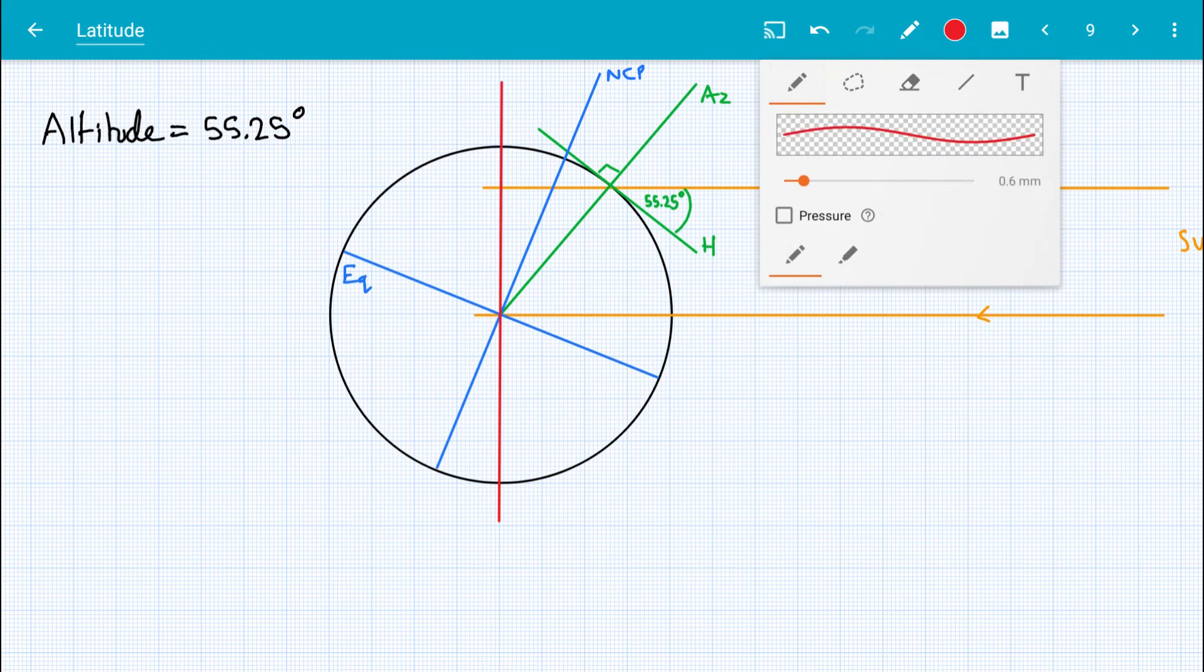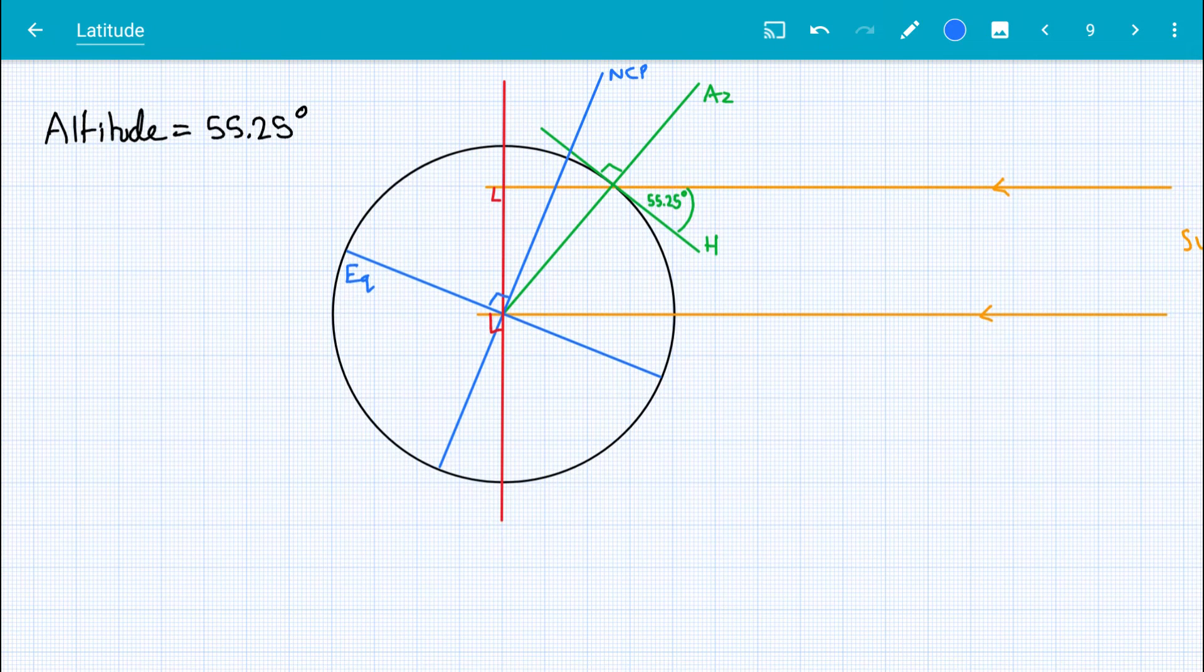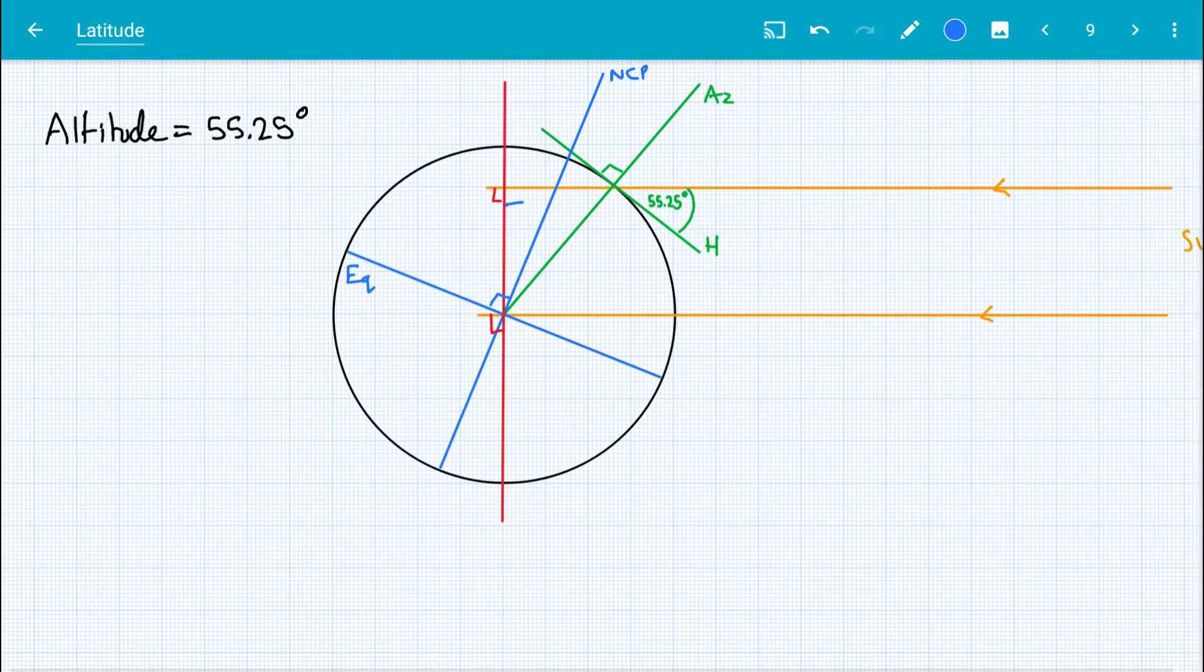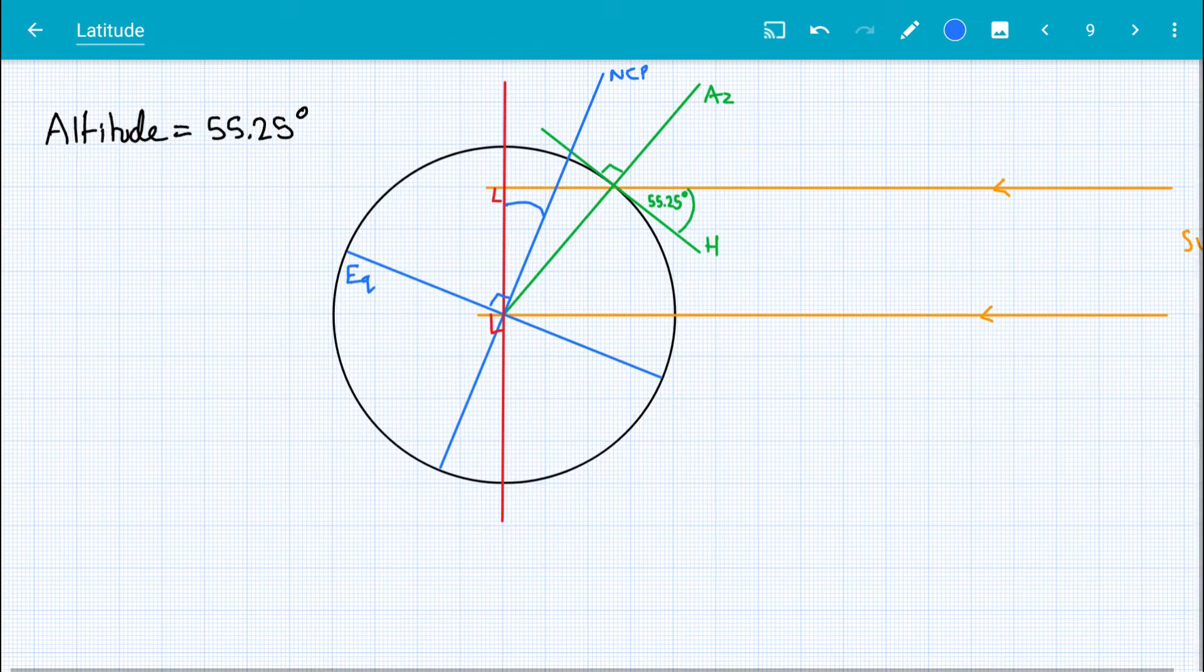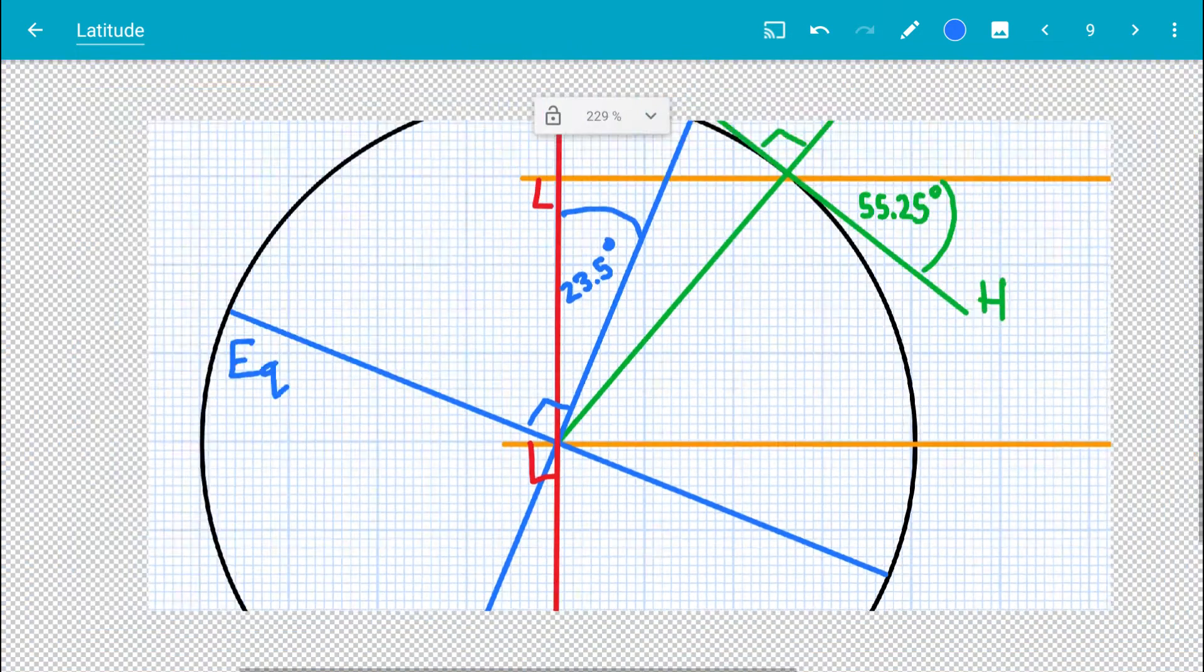So let's label off some 90 degree bits. That's 90 degrees, that's 90 degrees, that's 90 degrees to that. Different color to make it clearer. And we have got this angle here. That angle is the axial tilt of the earth, 23.5 degrees is what we are taking that as.